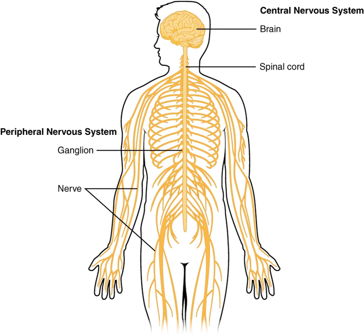The cerebellum lies behind the pons and is composed of several dividing fissures and lobes. Its function includes the control of posture and the coordination of movements of parts of the body, including the eyes and head, as well as the limbs. Further, it is involved in motion that has been learned and perfected through practice, and it will adapt to new learned movements. Despite its previous classification as a motor structure, the cerebellum also displays connections to areas of the cerebral cortex involved in language and cognition.